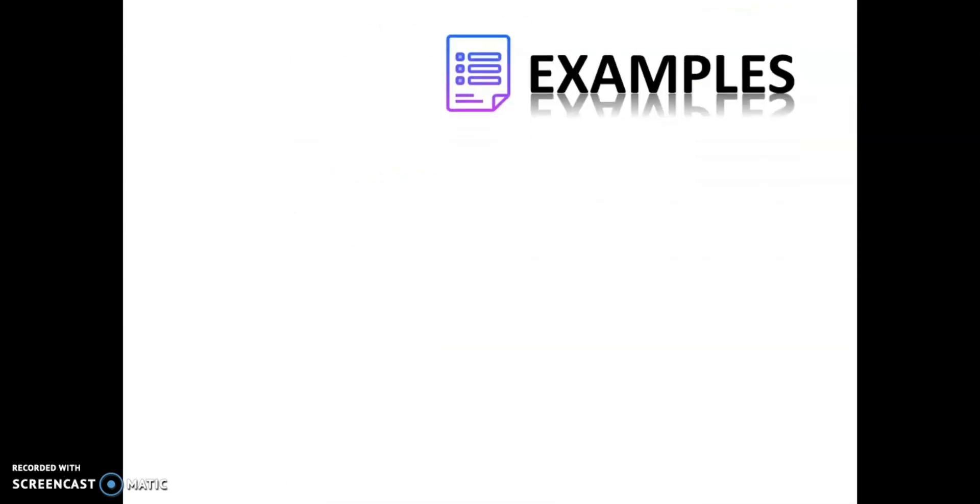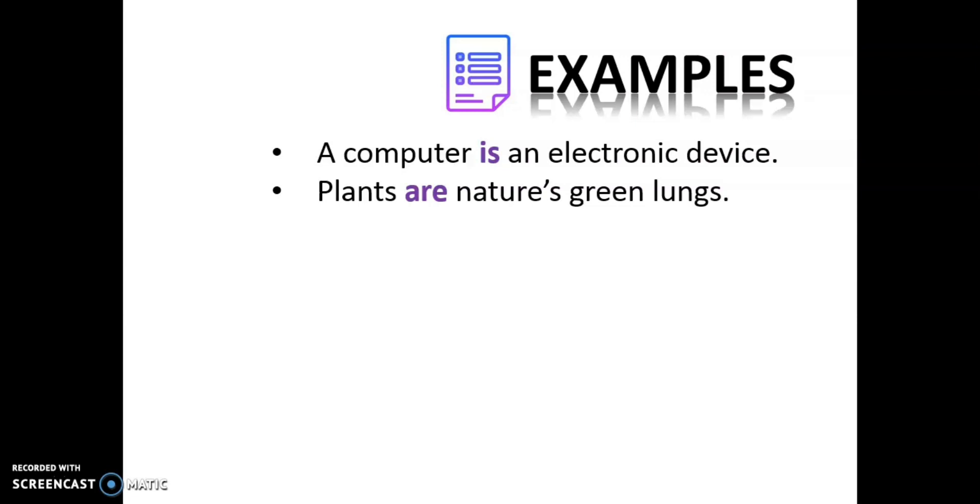Let me show you the examples. First, a computer is an electronic device. When you are writing a definition, you need to utilize common words or expressions. For example, you utilize the word is here in your sentence structure. You want to define what is the meaning of computer. So you utilize is as your common word or expression. A computer is, there it goes, the definition of computer, an electronic device. Same goes with the second example. Plants are nature's green lungs. Basically, plants, it is in plural, so you use are as your common words or expression when you want to define the meaning of plants.